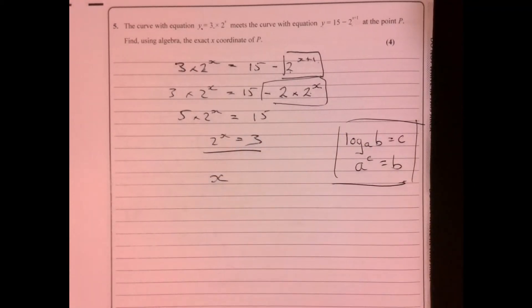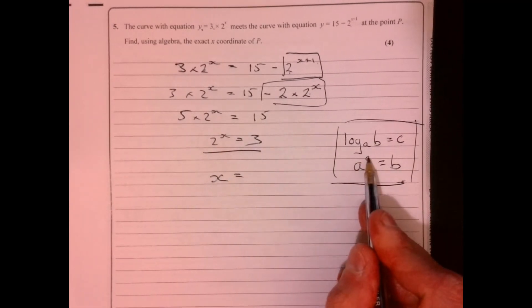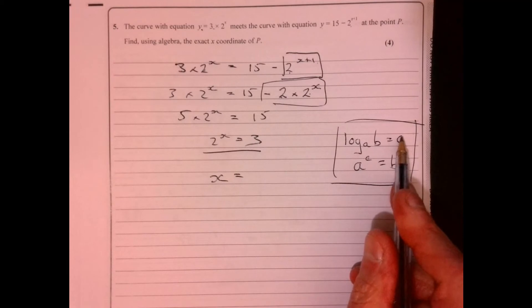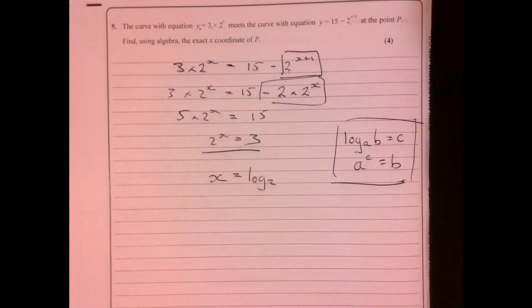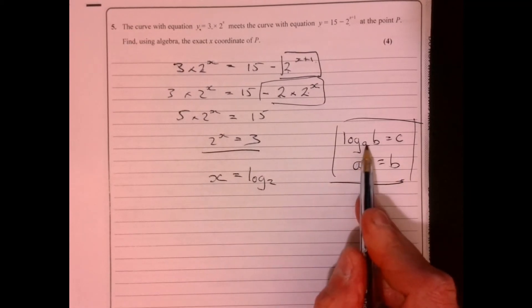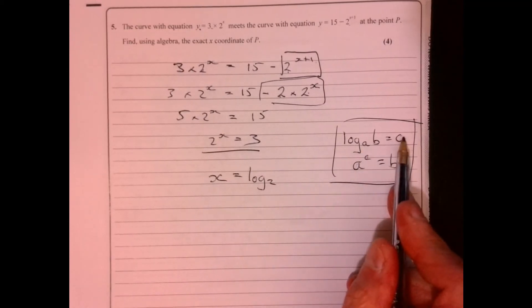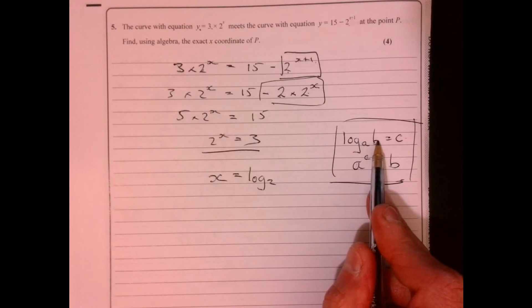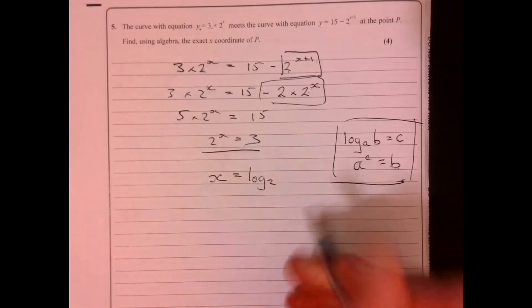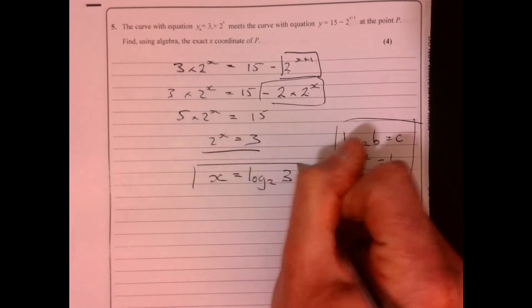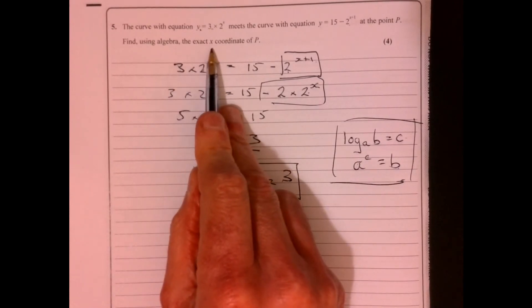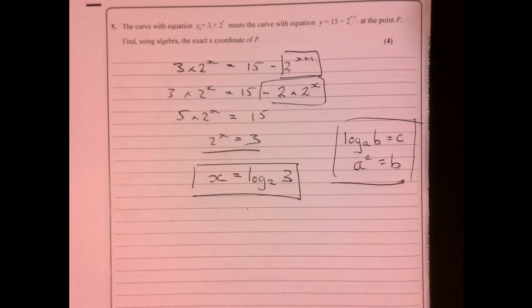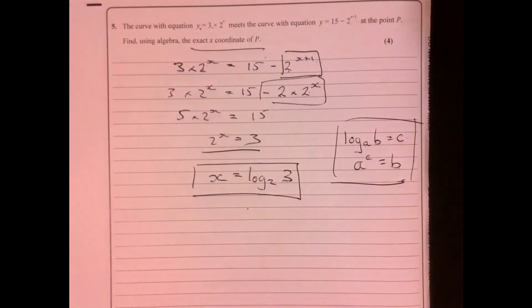Because then you can say x equals, that's like the power bit, isn't it? OK, so it's going to be log base two. OK. And then what have we got there? Right. So b is that bit. There we are. And it was just work out the x coordinate. You don't need to do anything else with it. That's it. There we go. Thank you.